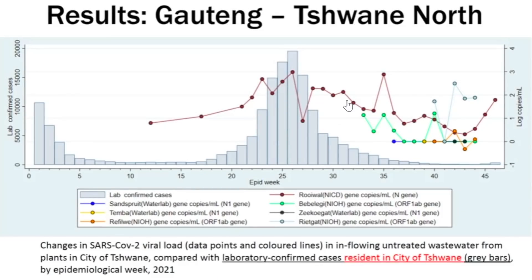We're also seeing this in Sunnyside North — in some parts of the precinct the number of cases are seemingly going up as well, derived from wastewater. We're seeing the amplification of these RNA fragments or RNA remnants going up, where we're only seeing a slight increase in the number of cases.